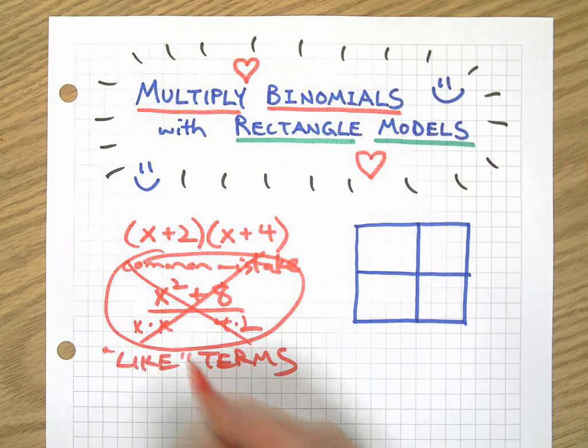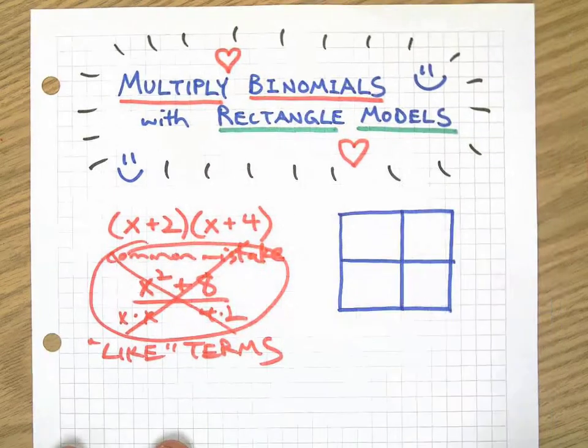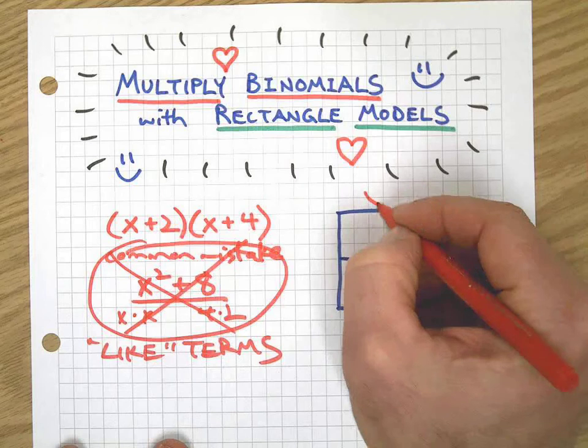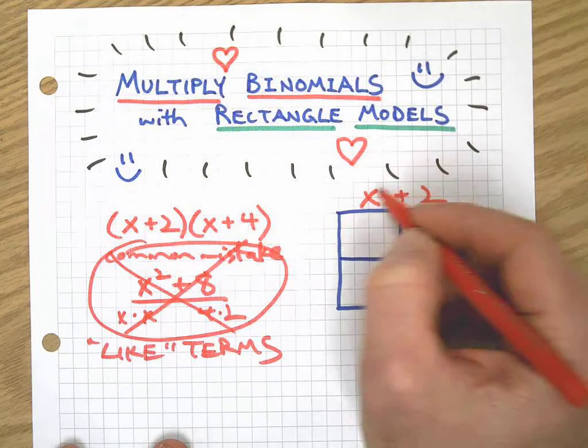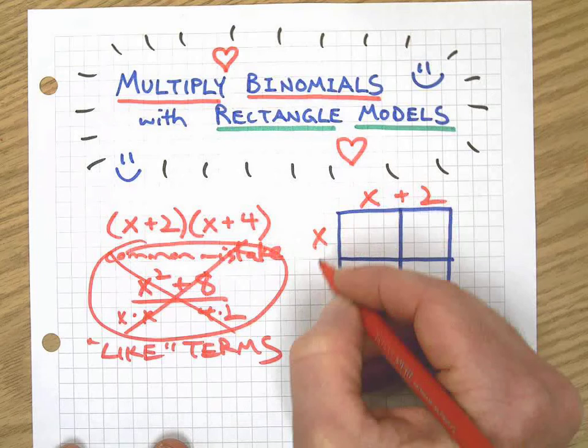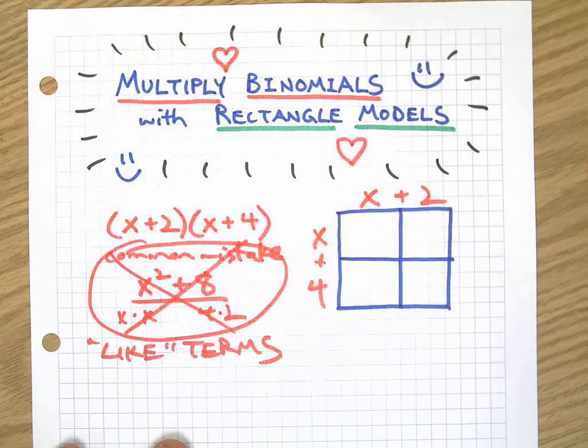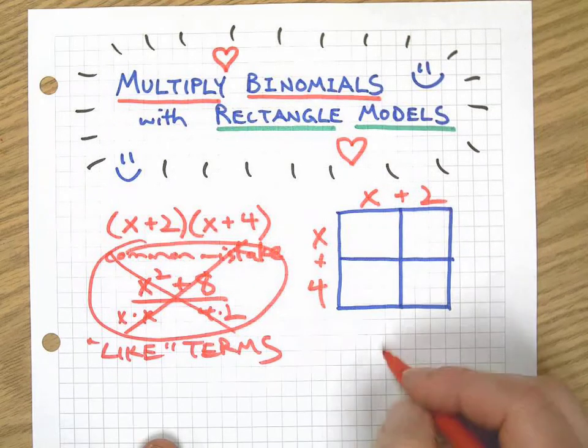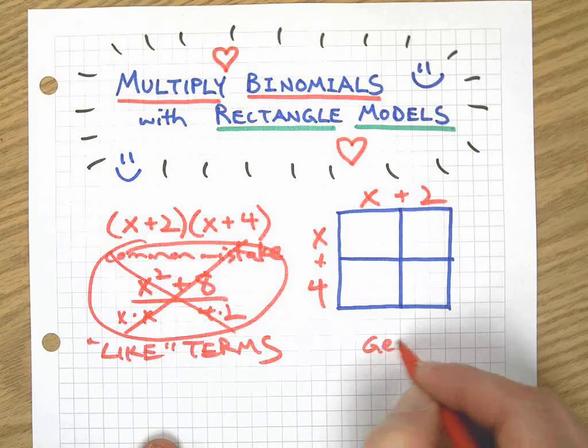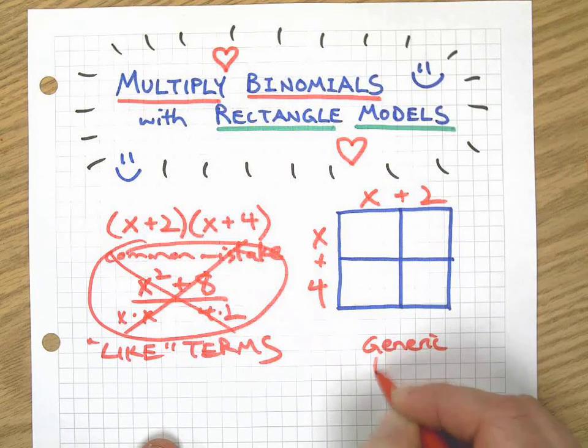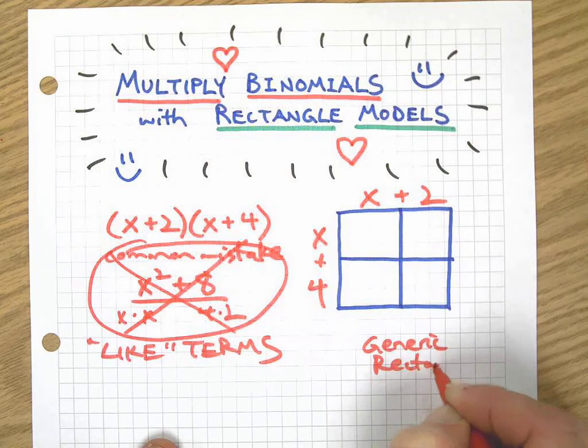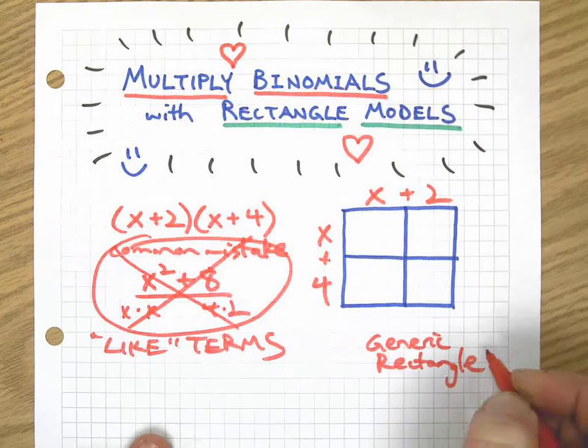Here's how it really works. Let's say we have our x plus 2 up here and let's put our x plus 4 over here. It doesn't matter which side you put them on. This is called a generic rectangle, by the way.